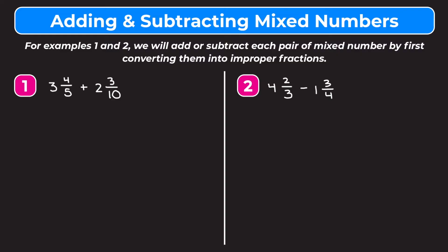If we look at 3 and 4 fifths, remember to convert a mixed number into an improper fraction we're going to start by multiplying the whole number by the denominator. So we're going to do 3 times 5 which is 15, and then we're going to add that result to the numerator. So 15 plus 4 is 19. So 19 is going to be our new numerator and our denominator stays the same. So we get that 3 and 4 fifths is the same as 19 fifths.